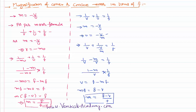Note that I have not applied any sign convention, which means these formulas are applicable for any scenario — either a convex or concave mirror — wherever the object or image may be. The positives or negatives of m can be interpreted as per our previous video lesson. So we can write the magnification as: minus v by u, or h2 by h1, or f by (f minus u), or (f minus v) by f.